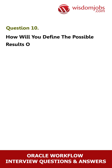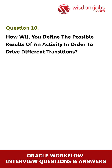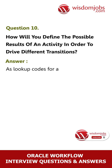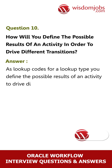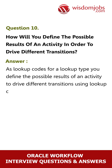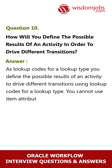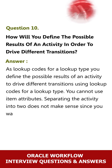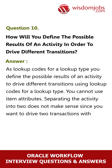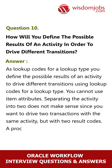Question 10: How will you define the possible results of an activity in order to drive different transitions? Answer: As lookup codes for a lookup type. You cannot use item attributes, and separating the activity into two does not make sense since you want to drive two transitions with the same activity but with two result codes. A process activity will not help in this scenario.